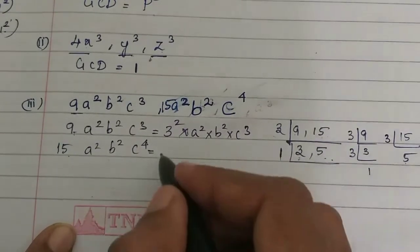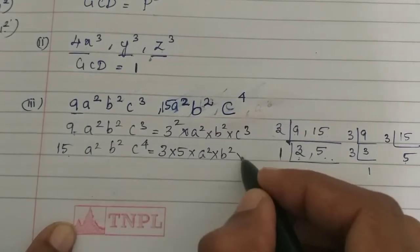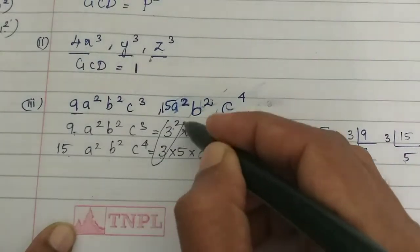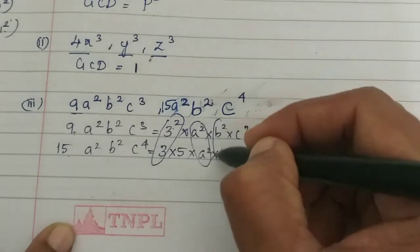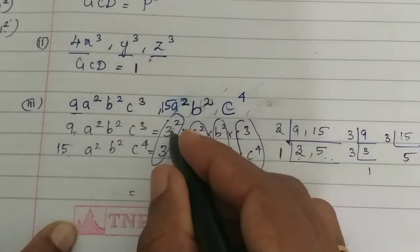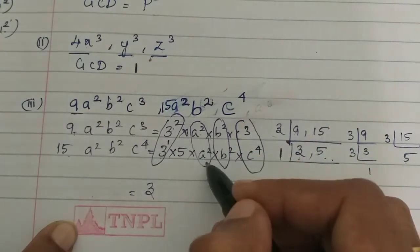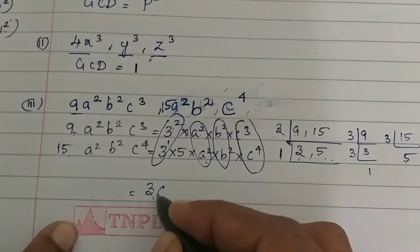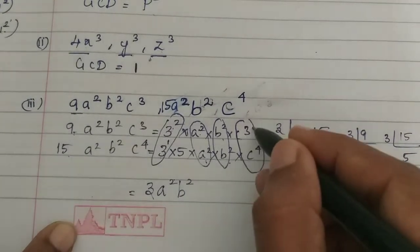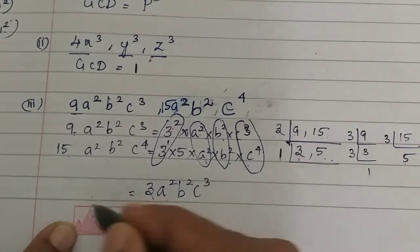Now for the variables: 9a²b²c³ gives us 3² × a² × b² × c³, and 15a²b²c⁴ gives us 3 × 5 × a² × b² × c⁴. Grouping the common bases: for the factor 3, the least power is 1, giving 3. For a², a² the least power gives a². For b², b² the least power gives b². For c³ and c⁴, the least power is c³. So the GCD is 3a²b²c³.